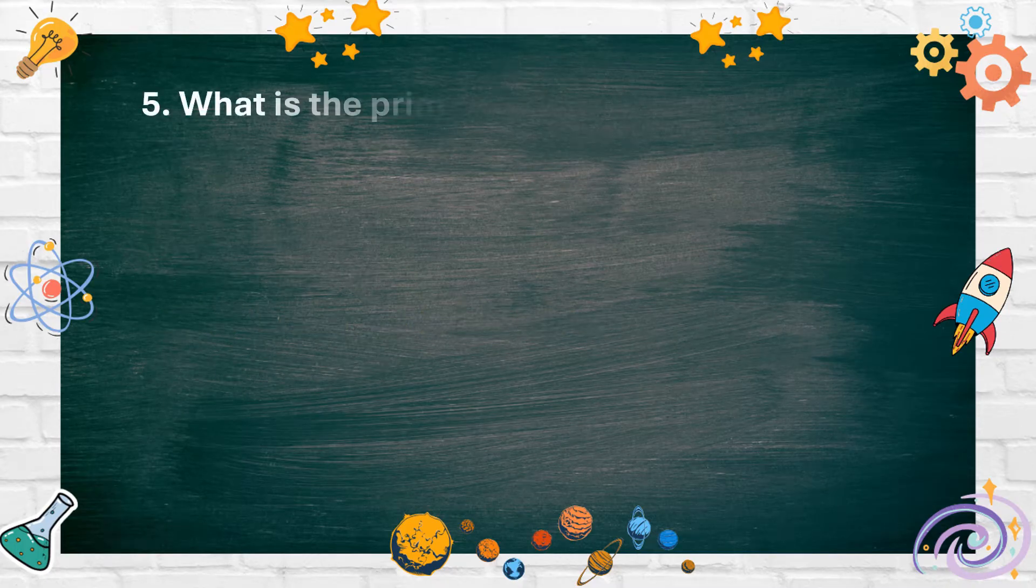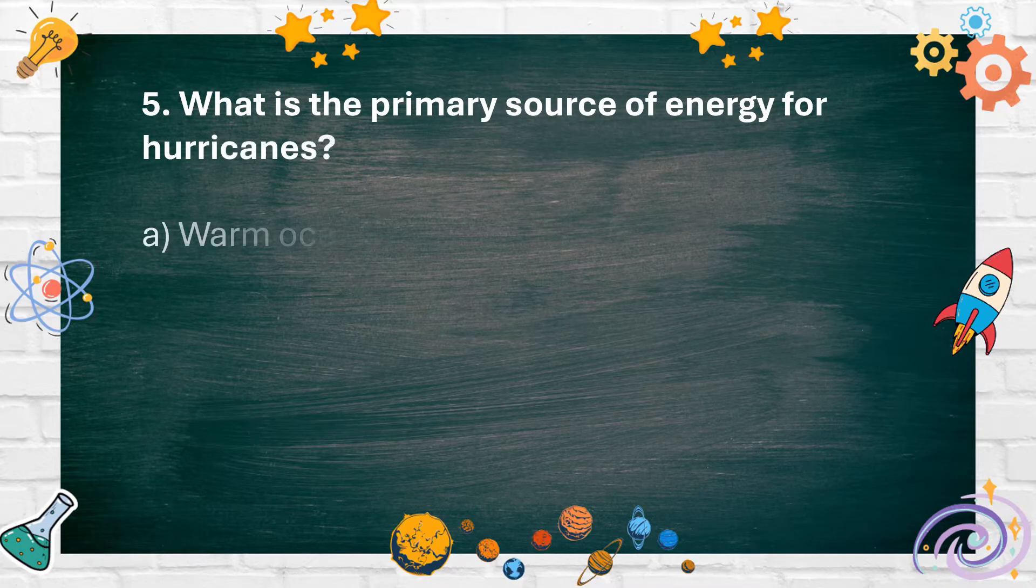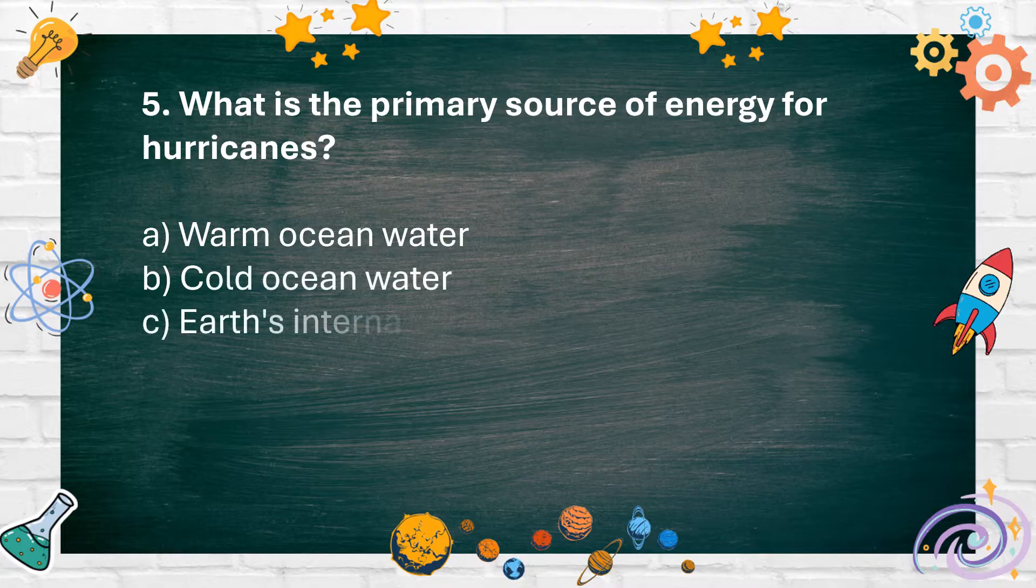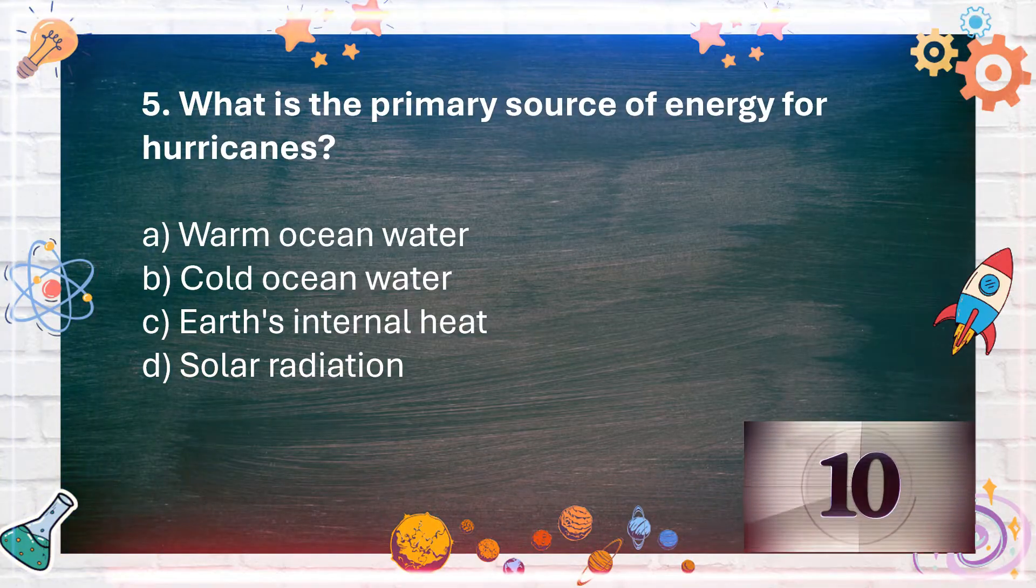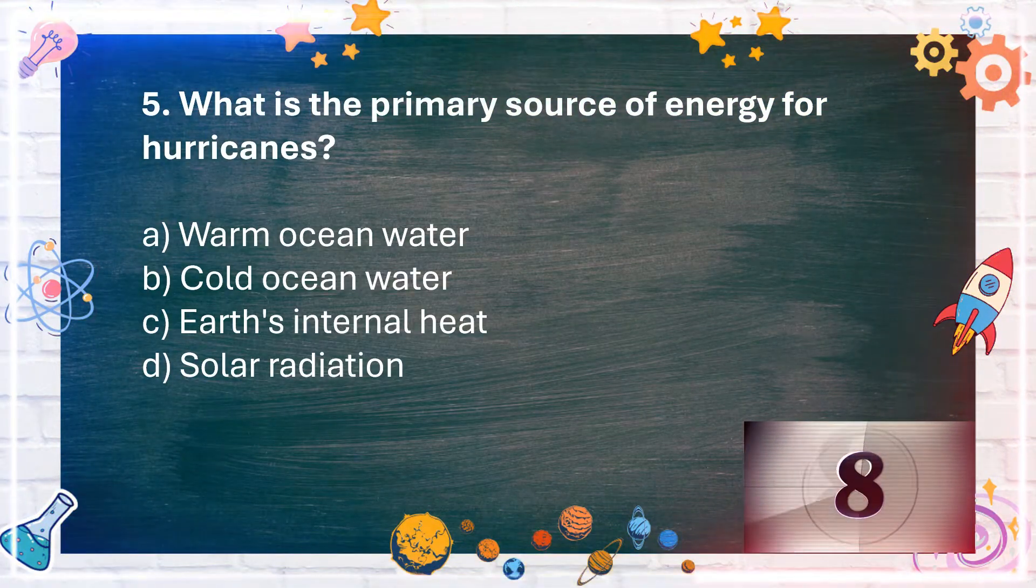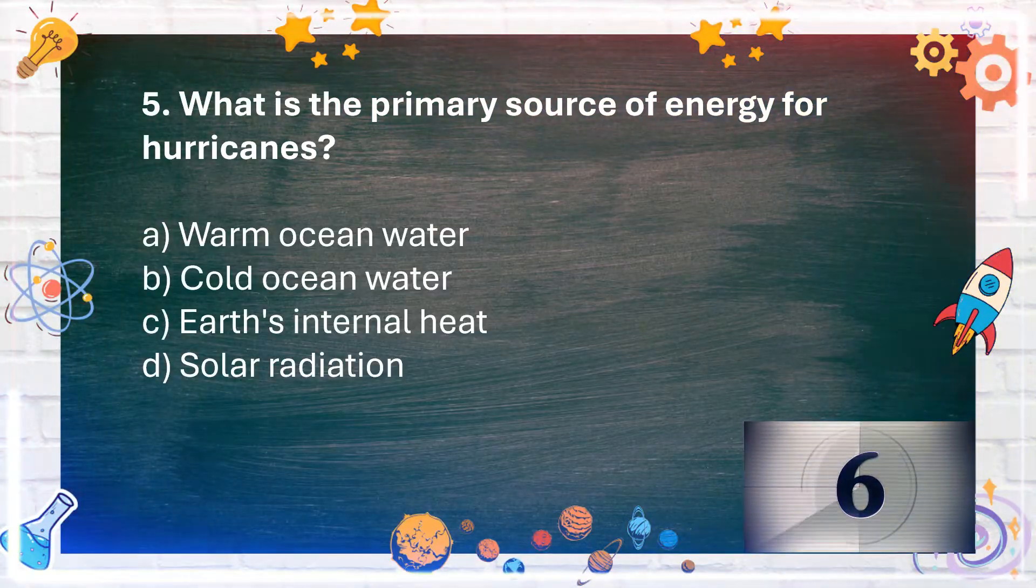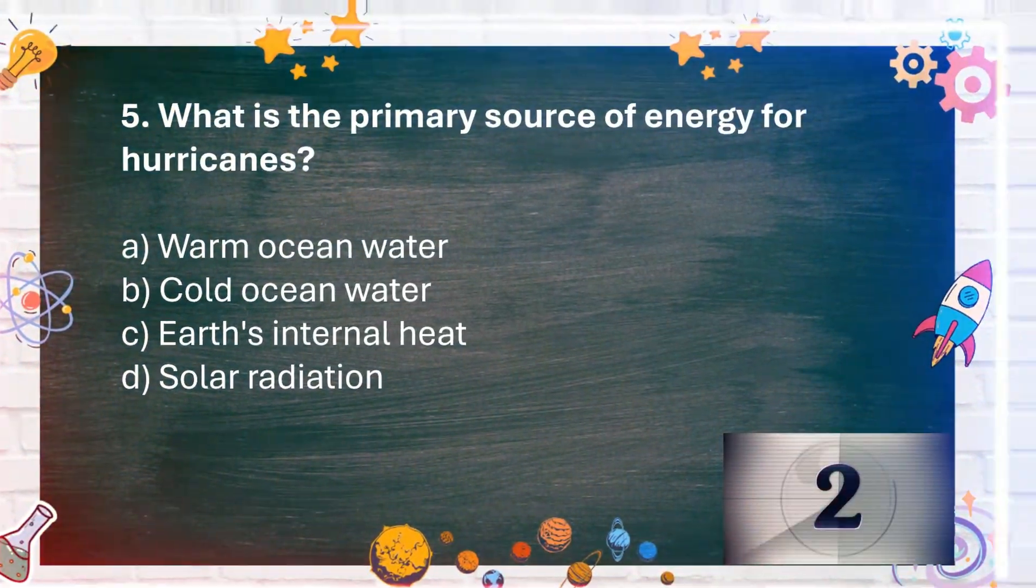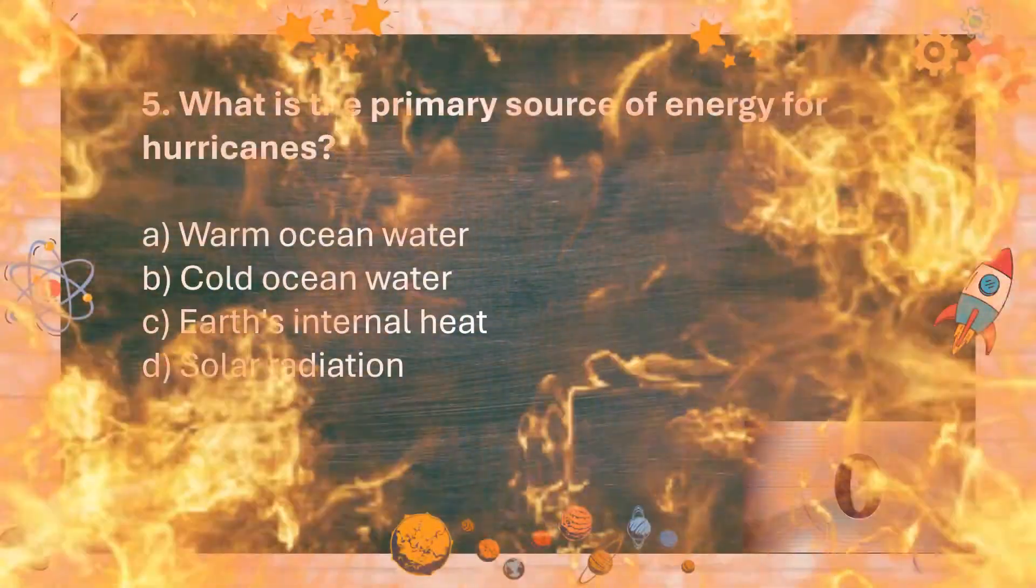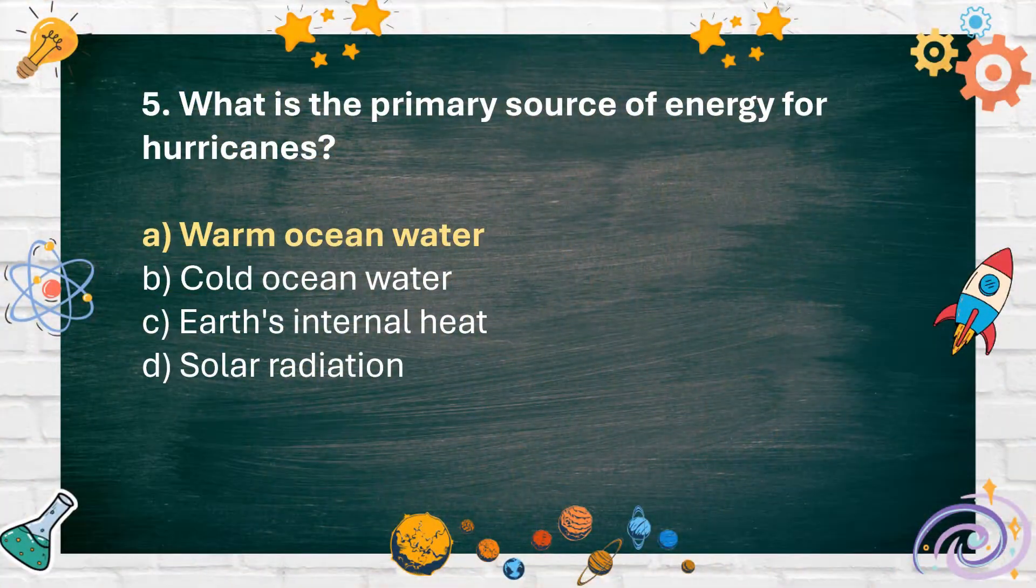Number 5: What is the primary source of energy for hurricanes? A. Warm ocean water, B. Cold ocean water, C. Earth's internal heat, D. Solar radiation. The answer is A. Warm ocean water.